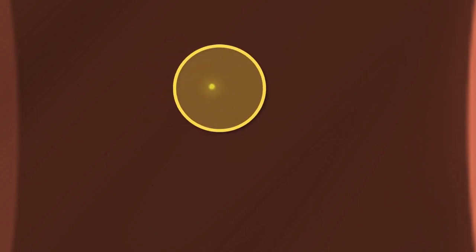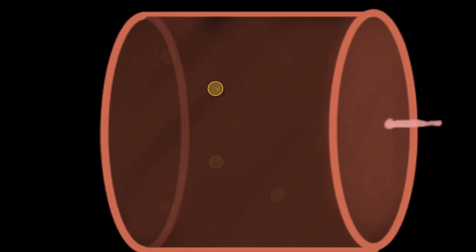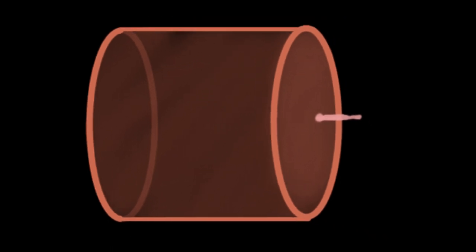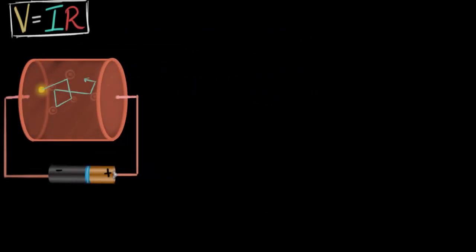However, in the presence of an electric field, we do see that slowly and steadily, it starts moving across the conductor. It's this motion that contributes to the electric current, and we call this the drifting motion. We figured out what that drifting velocity was.